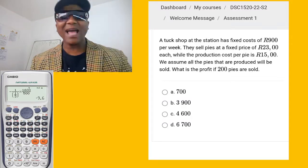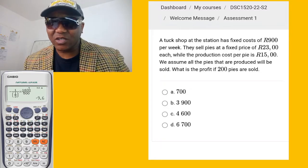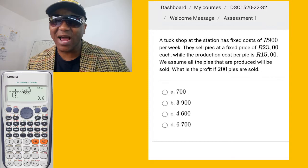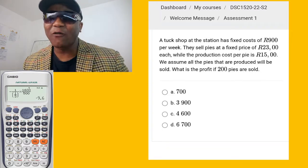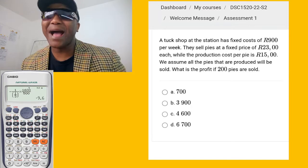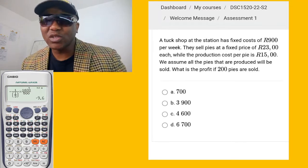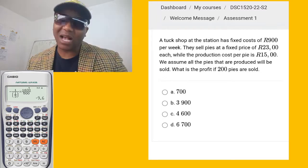We have a question right here. A tuck shop at the station has fixed costs of R900 per week. They sell pies at a fixed price of R23 each, while the production cost per pie is R15. We assume all the pies that are produced will be sold. What is the profit if 200 pies are sold?